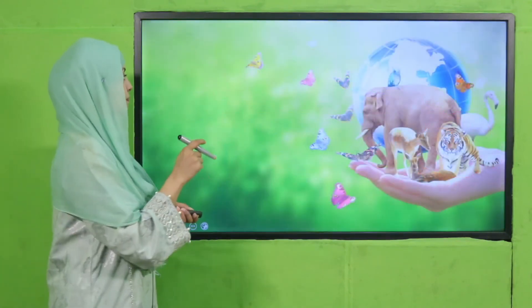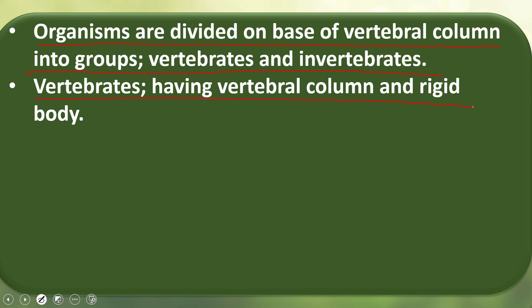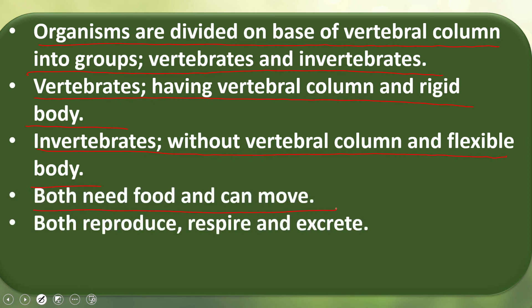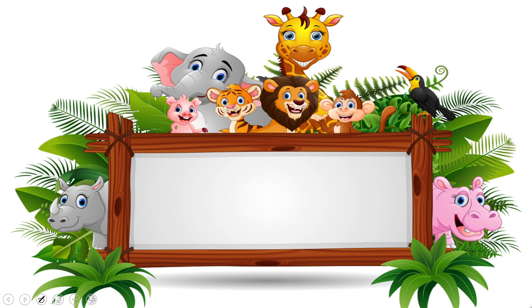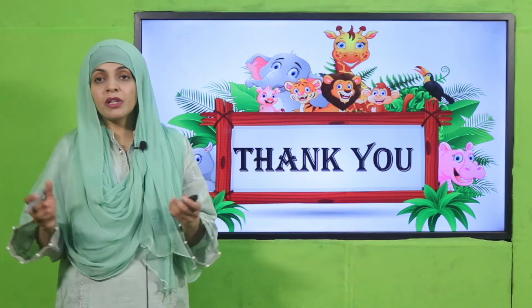Now is the time for wrap-up. Today we have learned that organisms are divided, based on the vertebral column, into two groups: vertebrates and invertebrates. Vertebrates, having a vertebral column, have a rigid body. Invertebrates, without a vertebral column, have a flexible body. Both need food and can move, both reproduce, respire, and excrete, and both have bilateral symmetry — except some groups of invertebrates that have radial symmetry. I hope you enjoyed the lecture. Keep everybody around you safe. Have a good day. Thank you.